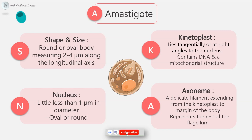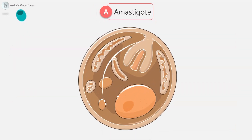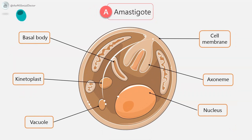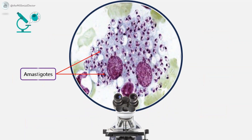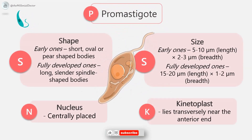The amastigote also contains a vacuole — an unstained clear space lying alongside the axoneme. The complete amastigote structure includes: the cell membrane, axoneme, nucleus, vacuole, kinetoplast, and the basal body, as seen in the diagram. These are the amastigotes as viewed under a microscope.